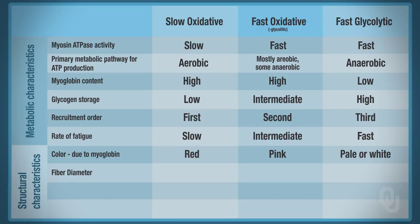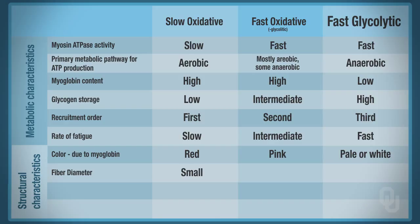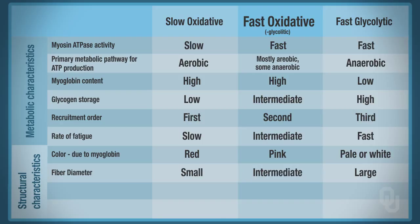Fiber diameter tells us about the ability to generate tension. In slow oxidative fibers, cross-bridge cycling is slow so we're not relying on generating a lot of force, giving a small fiber diameter. Fast glycolytic does fast cross-bridge cycling and generates a lot of tension, so it has a large fiber diameter — the greater the fiber diameter, the more sarcomeres you have. Fast oxidative is in between: it generates more force than slow oxidative but less than fast glycolytic.